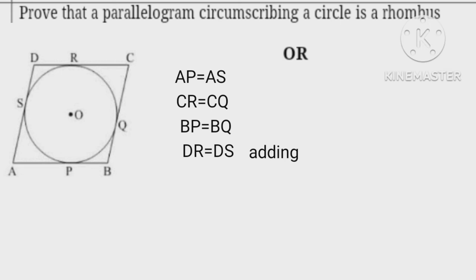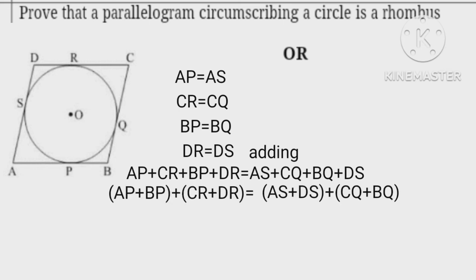Adding all the four equations: AP plus CR plus BP plus DR equals AS plus CQ plus BQ plus DS. Combining in pairs, we get AP plus BP plus CR plus DR equals AS plus DS plus CQ plus BQ.